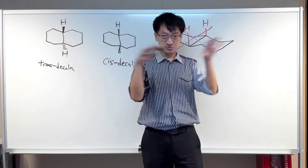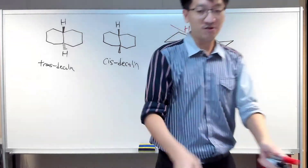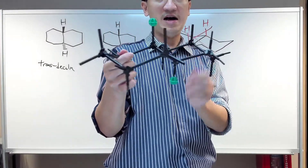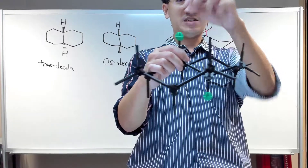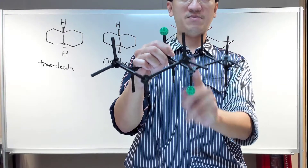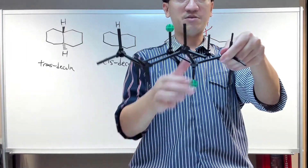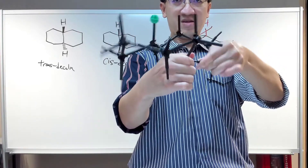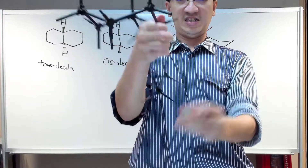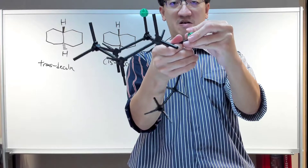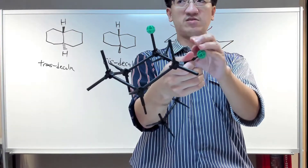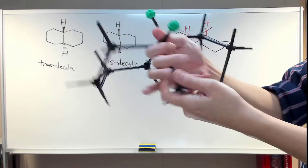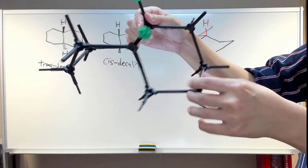So how shall we draw it? I'm going to use the same model I used earlier — you may note this is the trans configuration. I'm going to dismantle this part and put the H in the cis position. So I put an H here — these two are now in the cis position — then I'm going to join this part up to the bottom and rotate such that we get a chair conformation.